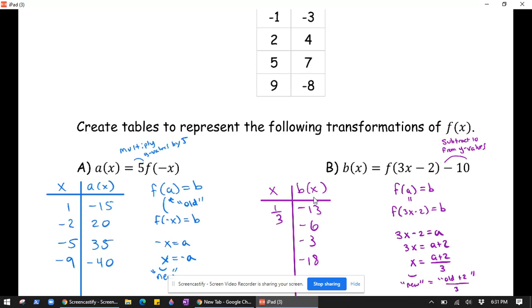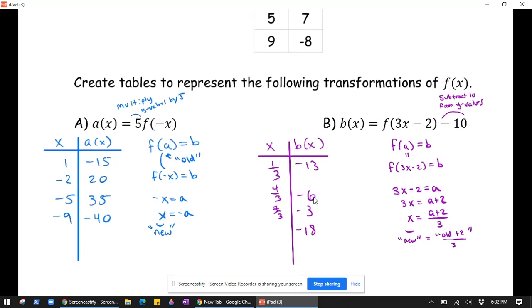Move that down a little bit so it's separated. Our old value 2 plus 2 is 4, 4 divided by 3 is 4 thirds. 5 plus 2 is 7, 7 divided by 3 is 7 thirds. And 9 plus 2 is 11, 11 divided by 3 is 11 thirds.